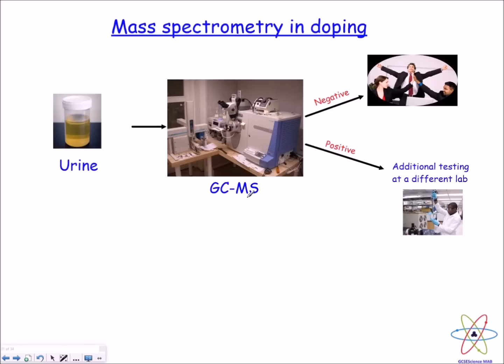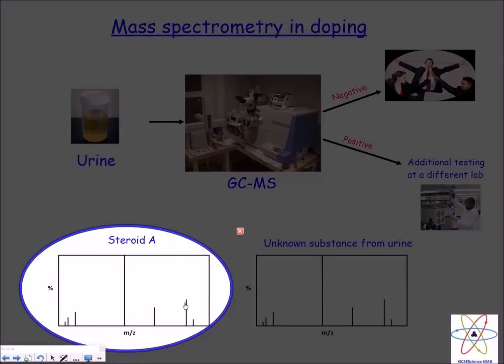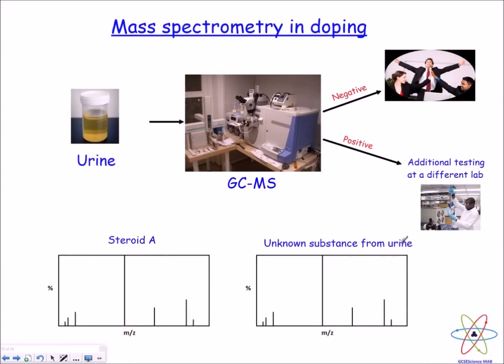The mass spectrometer identifies these individual components and to make the identification process easier, we use something called a mass spectrometry database. This database just contains the fragmentation patterns of all the known illegal drugs. If you look over here, I've got steroid A, for example, and this steroid has a unique fragmentation pattern that no other molecule has. So if a compound that is found in athlete's urine has the exact same fragmentation pattern, then that can only mean that the athlete has abused that particular drug.